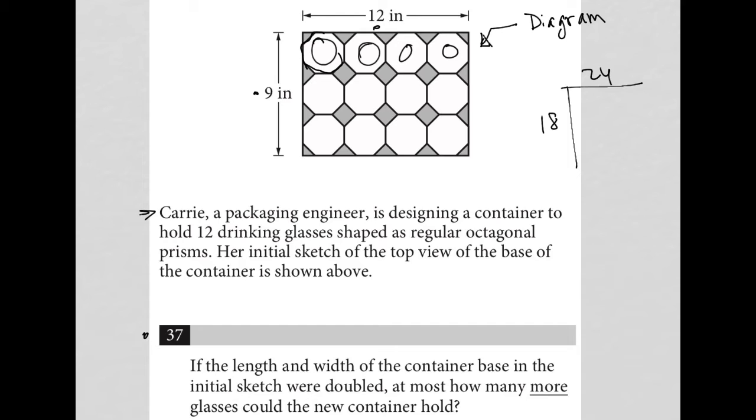All right, so I'm going to do this based upon area and just say that if there's 1, 2, 3, 4, 8, 12 glasses that can be held here. So 12 glasses per, the area here would be 12 times 9. 12 times 9. So 12 glasses per area of 108.